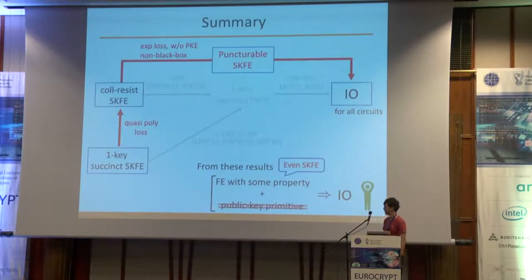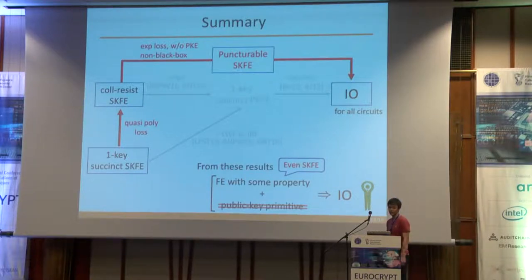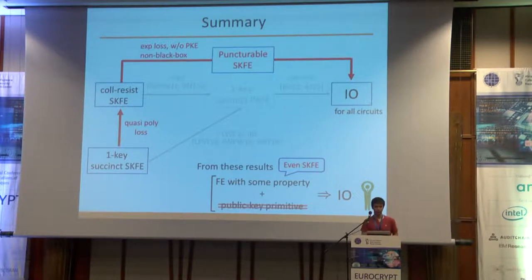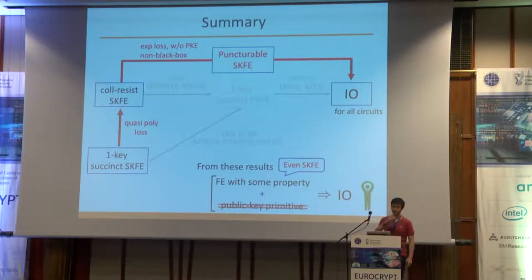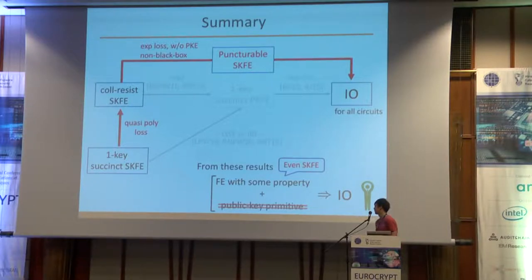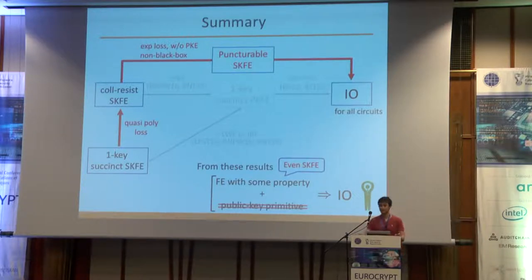This is a summary of my talk. In this work, we show how to construct I.O. for all circuits based only on collusion-resistant SKFE. Our construction is non-black-box, so we can circumvent the impossibility results of Asharov and Segev. We also show how to construct collusion-resistant SKFE based only on single-key succinct SKFE with quasi-polynomial security loss. Thank you.